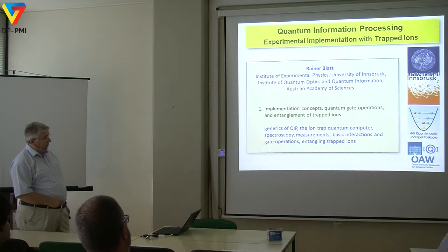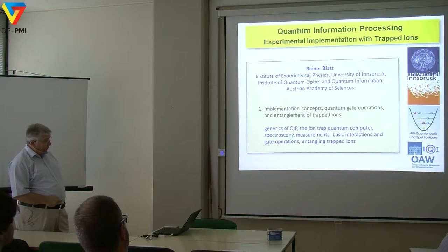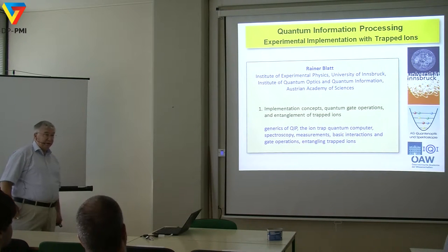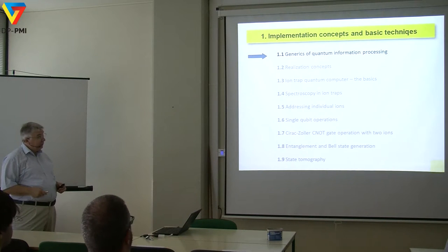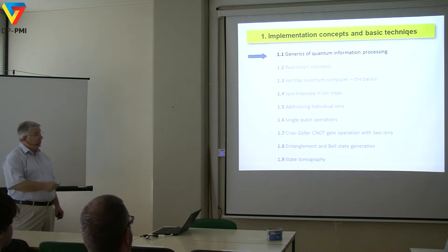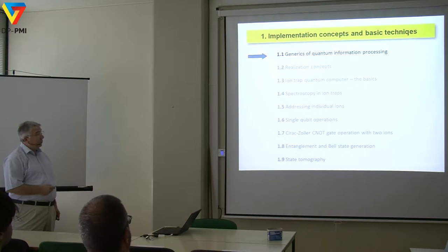This is about the generics of quantum information processes in the ion-trap quantum computer: the spectroscopy that we need, some measurements, basic interactions and gate operations, and entanglement operations. These are the basics that need to be understood in the first lecture in the next 45 to 50 minutes. I have given you all the chapter titles and you will see in each chapter what we do. Let's start with the generics.